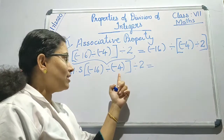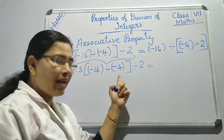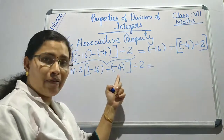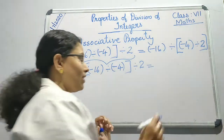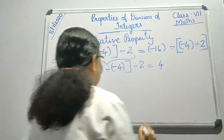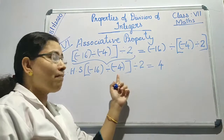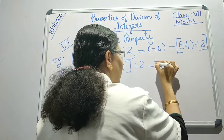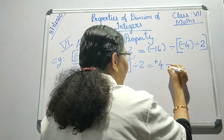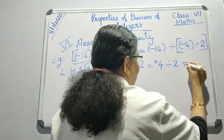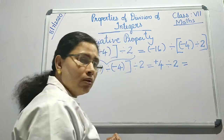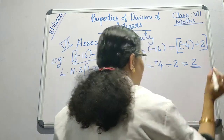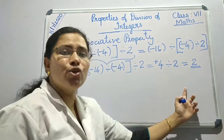Minus 16 divided by minus 4: first, 16 divided by 4 is 4. Minus by minus gives plus, so I get plus 4. Then plus 4 divided by 2 is equal to 2. So the left hand side is 2.